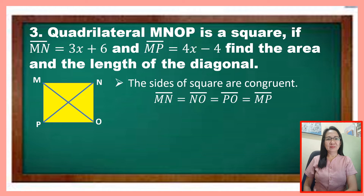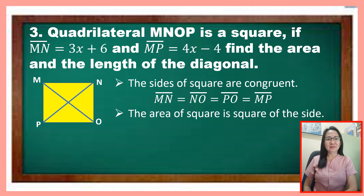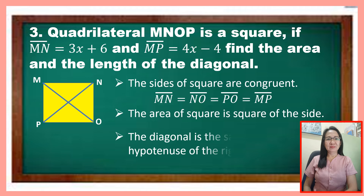For the area, similar to a rectangle, we multiply length times width, but since all sides of a square are equal — represented as s — the area of a square is s squared. For the diagonal, it is the same as the hypotenuse of a right triangle, so we use the Pythagorean theorem, which tells us the sum of the squares of the two legs equals the square of the hypotenuse.